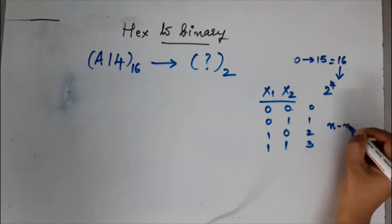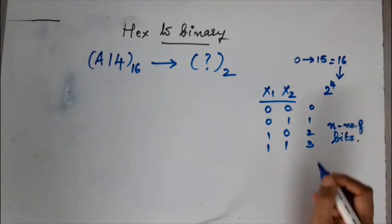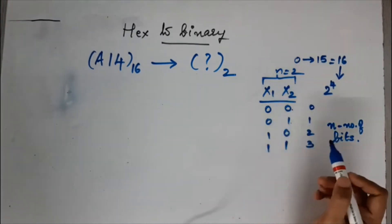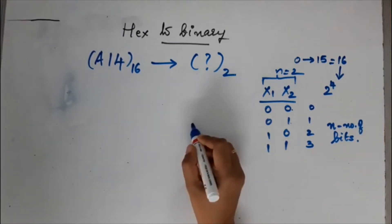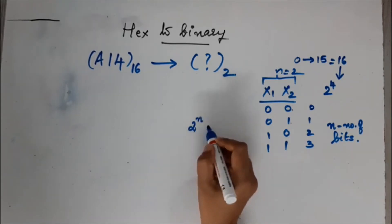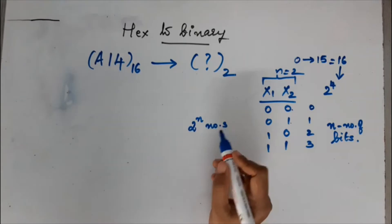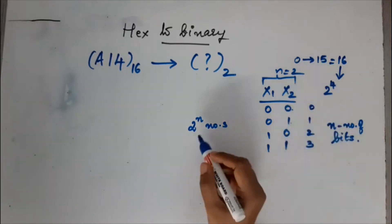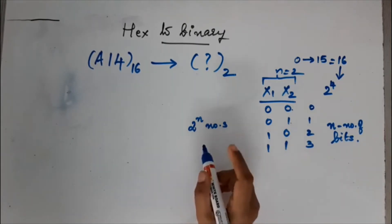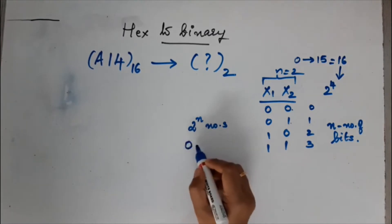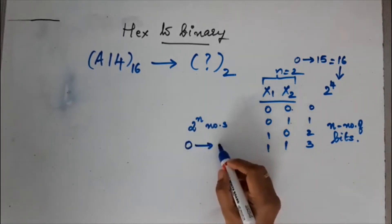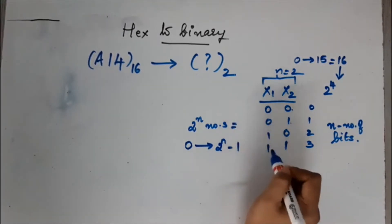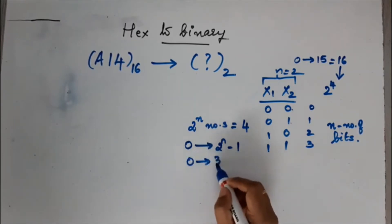If n is the number of bits — in this case 2 — then using n bits you can represent 2 raised to n different combinations. That gives 4 combinations here. The largest number you can represent using n bits is 2 raised to n minus 1, which is 4 minus 1, that is 3.